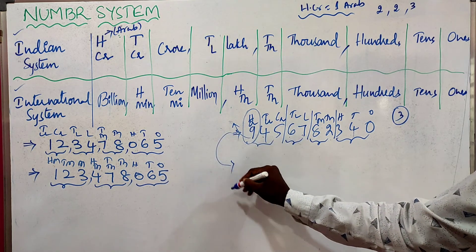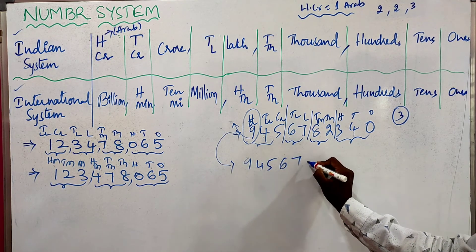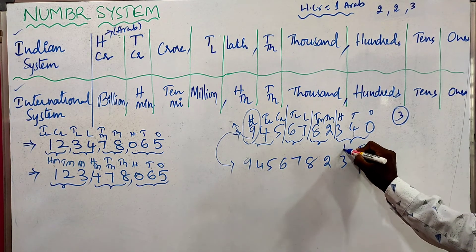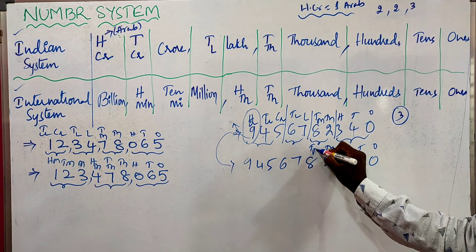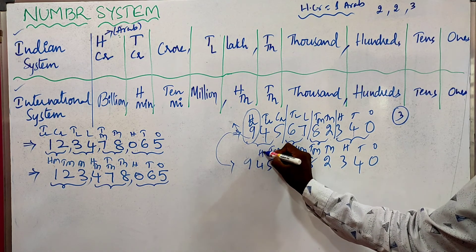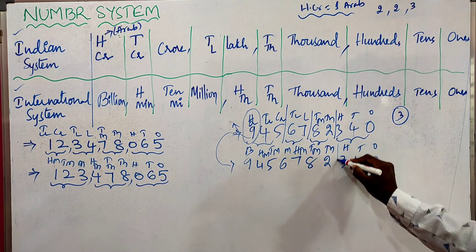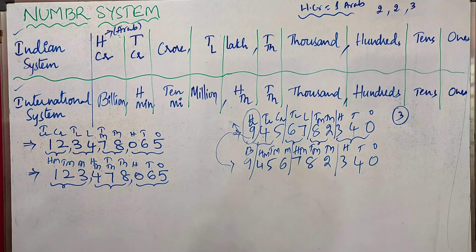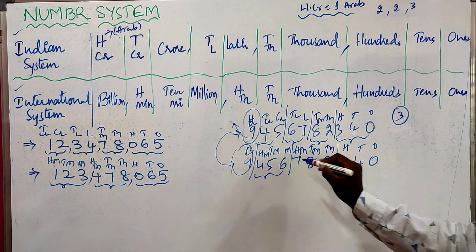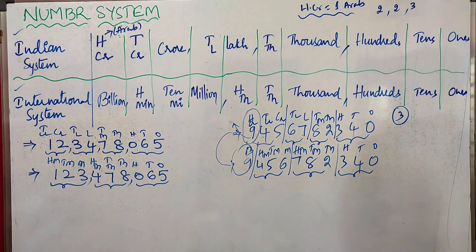Now the same number we will read in the international system. Place values from right: 1s, 10s, 100s, 1000s, 10,000, 100,000, millions, 10 millions, 100 millions, and billions. Placing the commas after every 3 digits — after 3, then 3, then 3 digits — this number in the international system of numeration is 9,456,782,340.